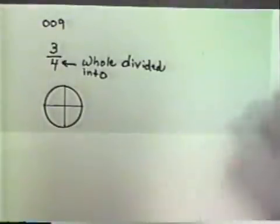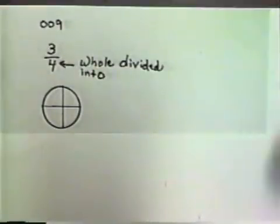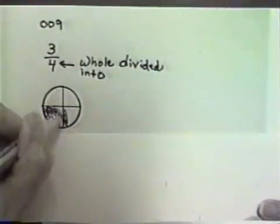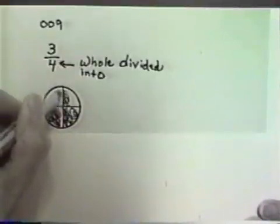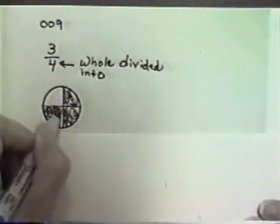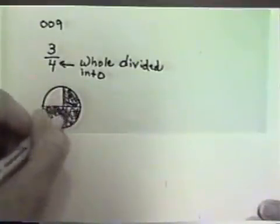Okay, those are supposed to be four equal parts. Let's imagine those are four equal parts. So I've split my whole into four parts. And if I'm interested in three-fourths of the circle, the three, the numerator, tells me how many of those four parts I'm interested in. So let's shade in three of the parts. Okay, and that would be three-fourths of my circle.